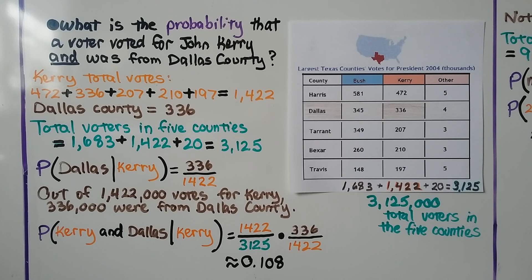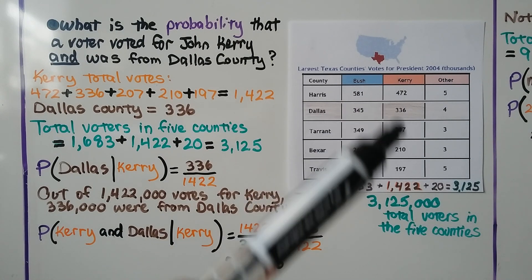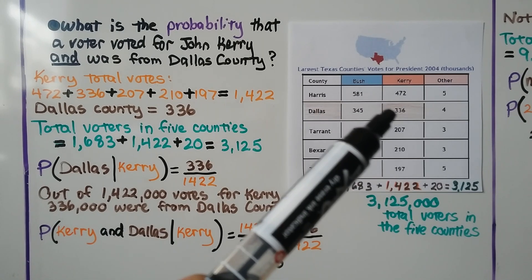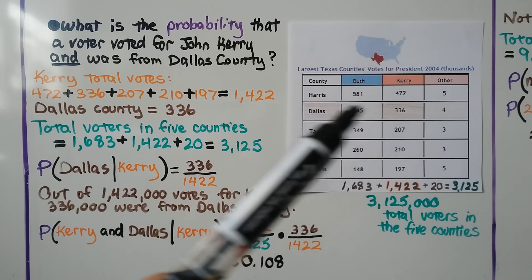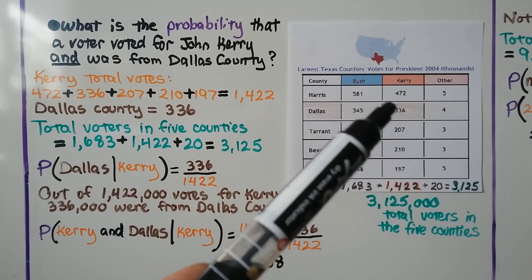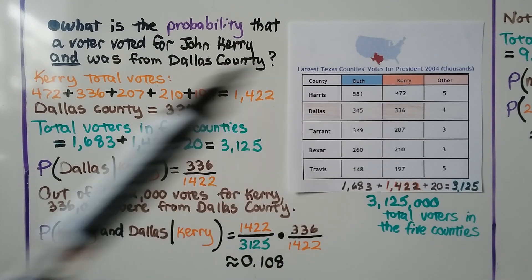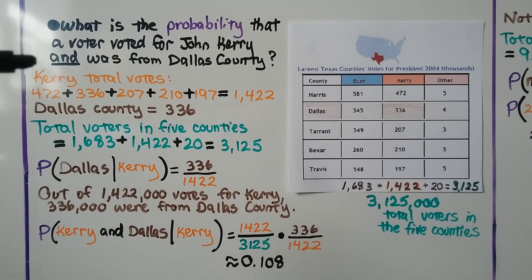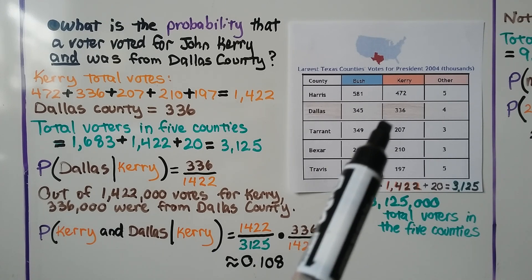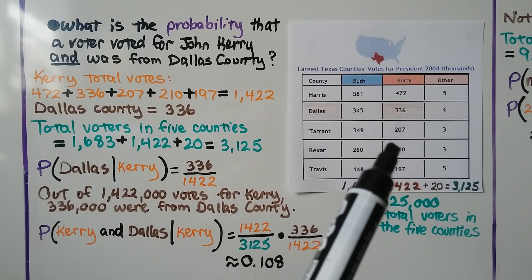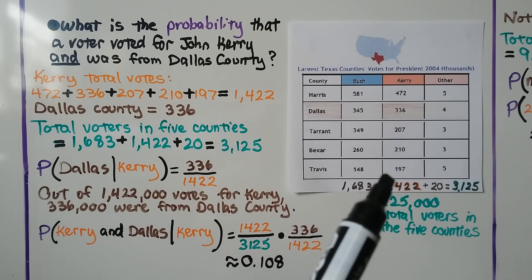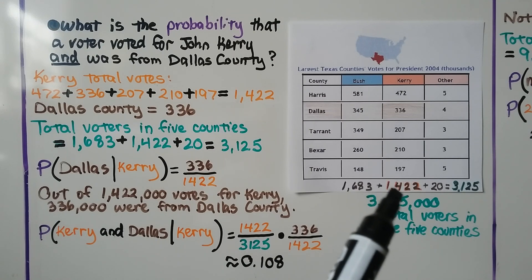Using the same data, what is the probability that a voter voted for John Kerry and was from Dallas County? We look at John Kerry and Dallas County: that's 336 votes. We total the Kerry votes — 472, 336, 207, 210, and 197 — and get 1,422.